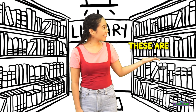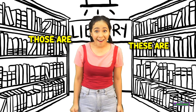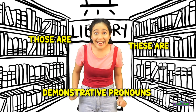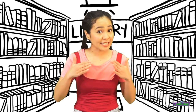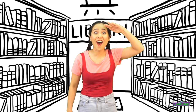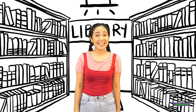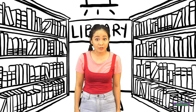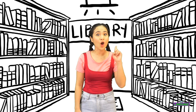'These are' and 'those are' are demonstrative pronouns that enable us to show or point out people or objects that are near us or far from us. Remember, these are used for plural nouns, or when you are pointing out more than one person or more than one object.